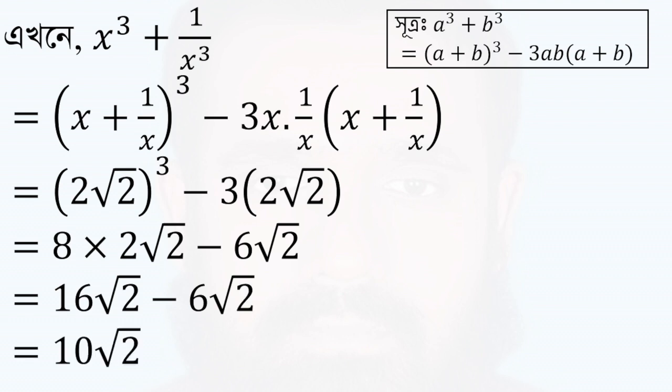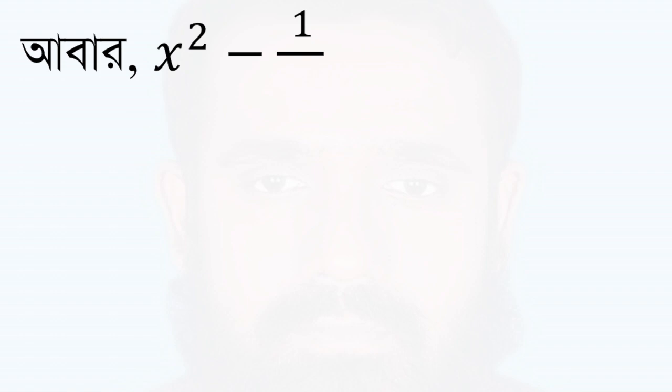Then we call this x squared minus x squared. We will apply a squared minus b squared identity.